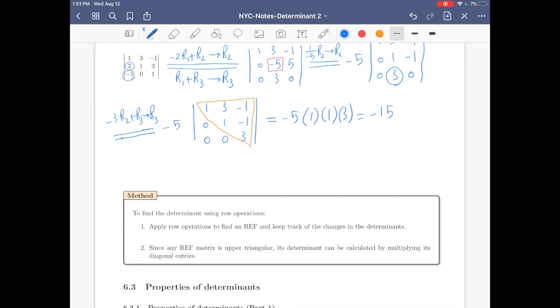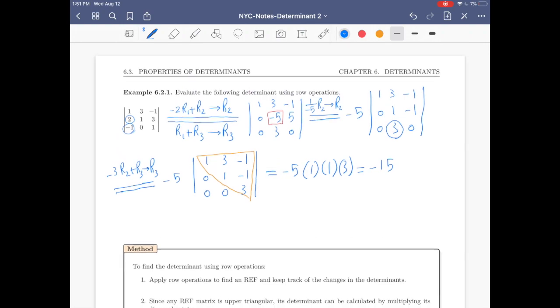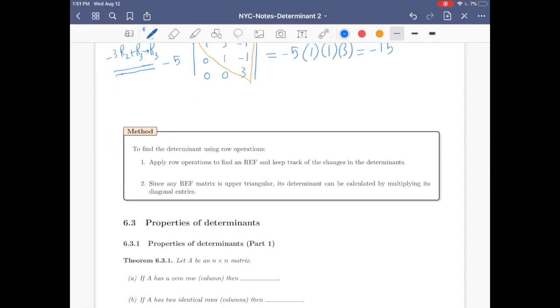It will be mentioned right here in the method. To find the determinant using row operations, step one: apply row operation to find an REF and keep track of the changes in the determinants. Number two: since any REF matrix is upper triangular, its determinant can be calculated by multiplying its diagonal entries.